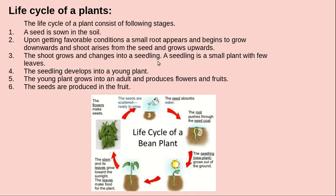A seedling is a small plant. The seedling develops into a young plant. The young plant grows into an adult plant and produces flowers and fruits. The seeds are produced inside the fruits.